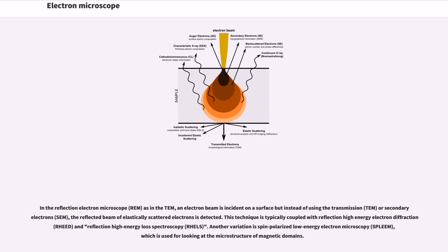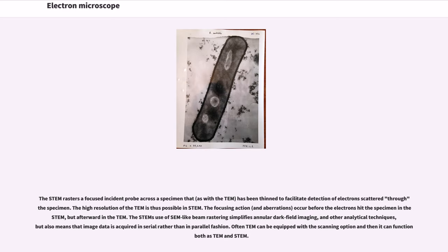This technique is typically coupled with reflection high-energy electron diffraction RHEED and reflection high-energy loss spectroscopy. Another variation is spin-polarized low-energy electron microscopy SPLEEM, which is used for looking at the microstructure of magnetic domains. The STEM rasters a focused incident probe across a specimen that, as with the TEM, has been thinned to facilitate detection of electrons scattered through the specimen.